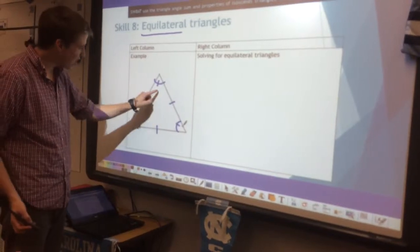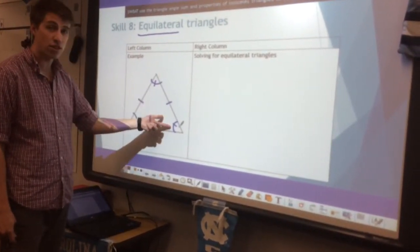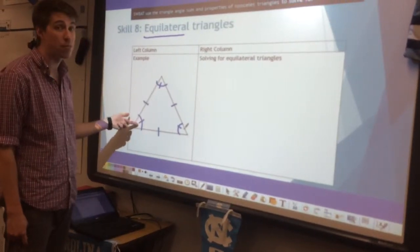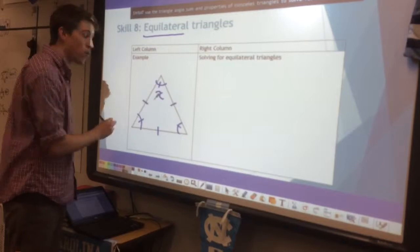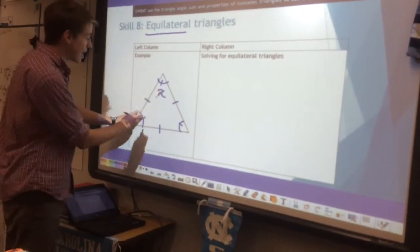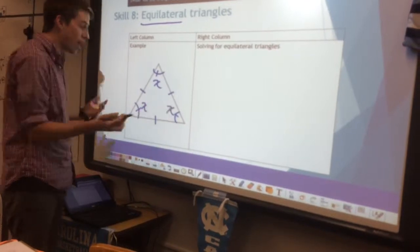Now, even though I didn't give you any information, we can actually solve for every single measure since they all have to be the same. If I don't know what this angle is, I can use angle x, just a good old variable. If that is x, that has to be x. If this angle is x, this angle has to be x. They all have to be the same.